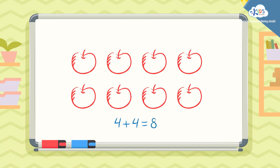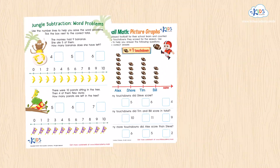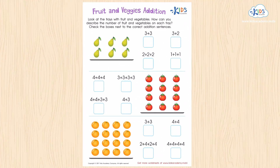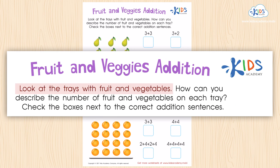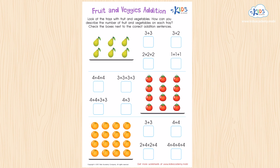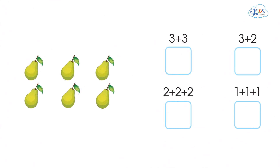Let's move on to the worksheet now. I'll read the directions first. Look at the trays with fruit and vegetables. How can you describe the number of fruit and vegetables on each tray? Check the boxes next to the correct addition sentences. Let's try the strategy we used before. First, let's count the pairs. One, two, three, four, five, six — there are six pairs.